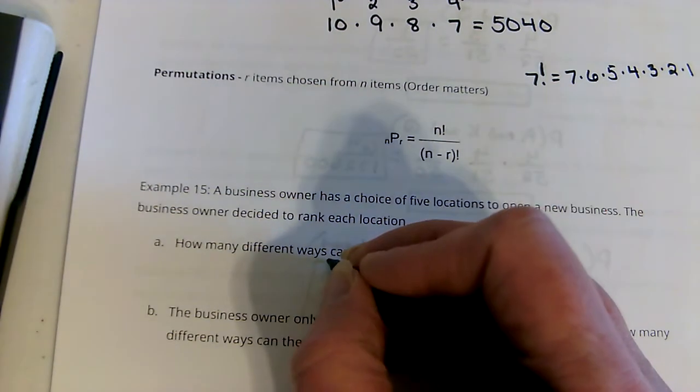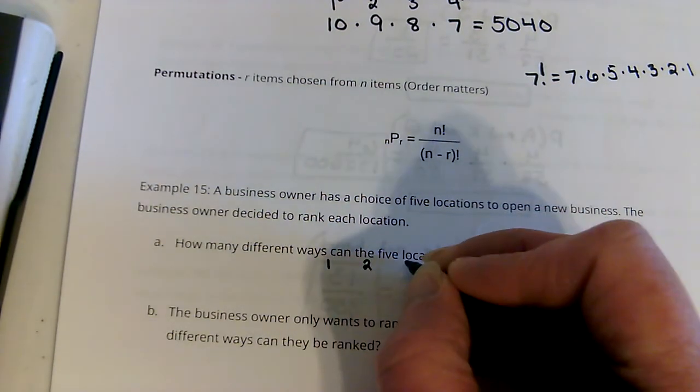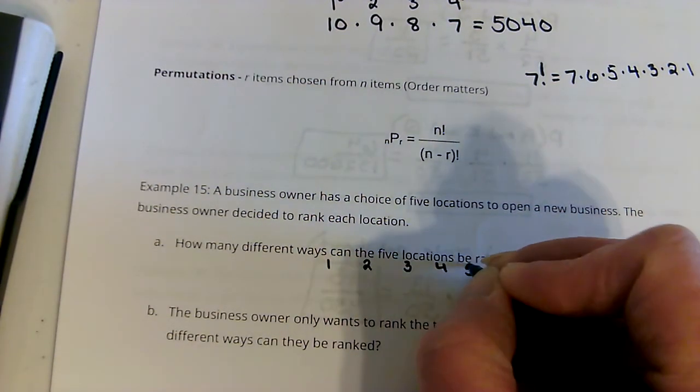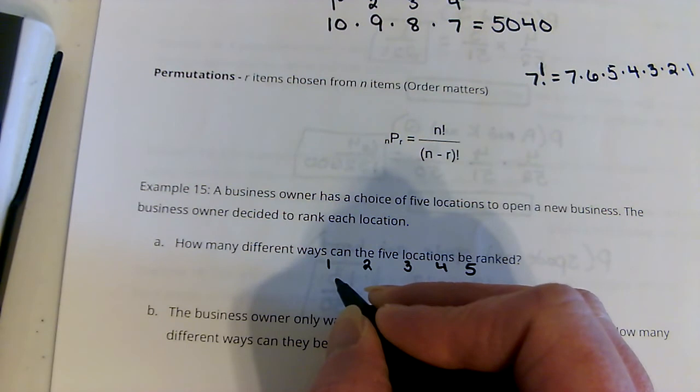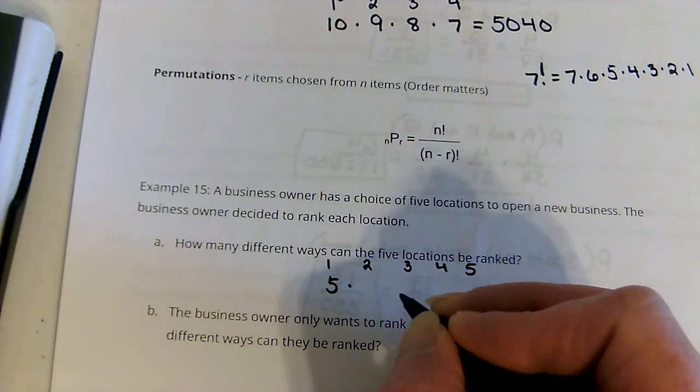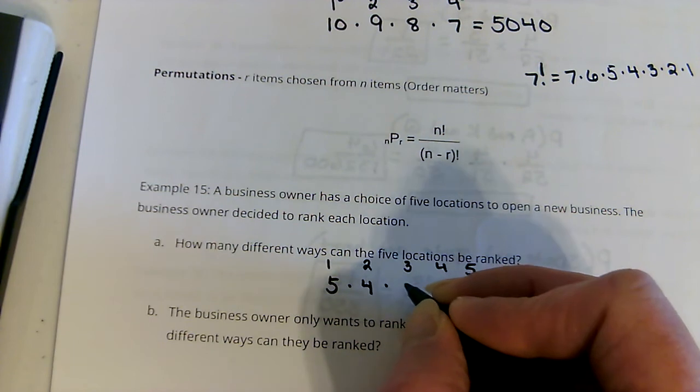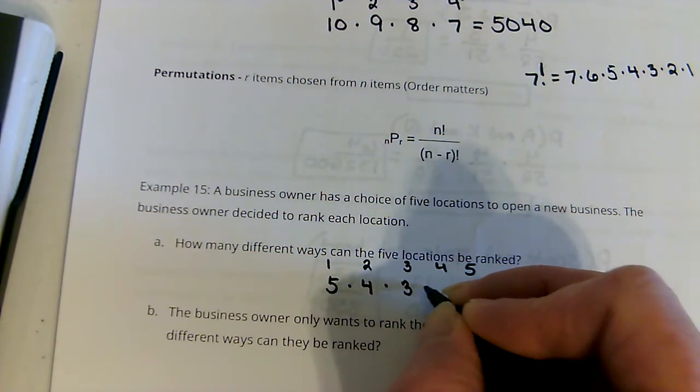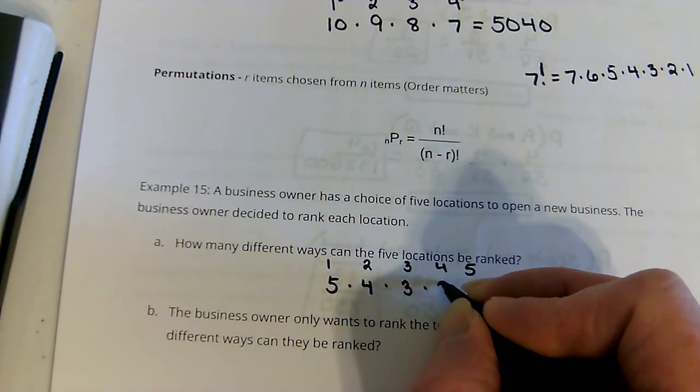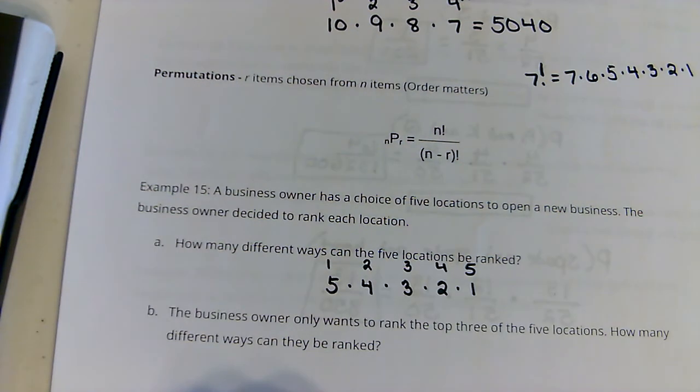How many different ways can the five locations be ranked? So, we've got 1st, 2nd, 3rd, 4th, and 5th. To be ranked 1st, he has 5 to choose from. 2nd place, there's now 4 to choose from. 3rd place, there's 3 to choose from. 2, that leaves only one place for last.